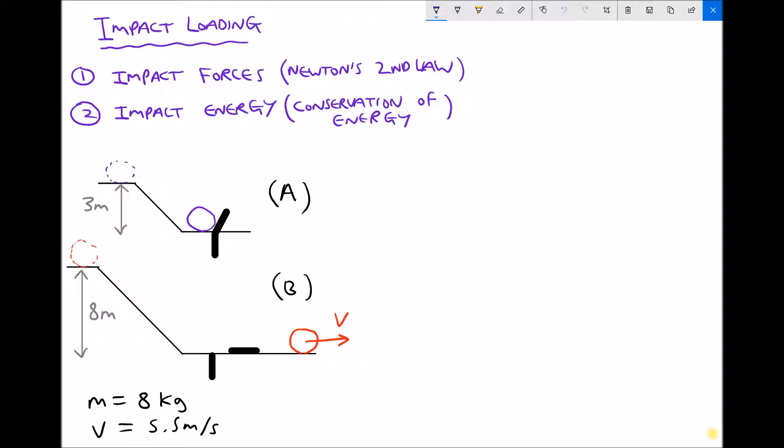Now what we want to know is how much impact energy caused this piece of material to fail, and this is relevant to a material property called toughness, where toughness is a material's ability to absorb impact loading.